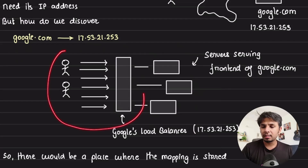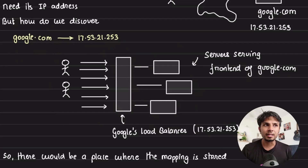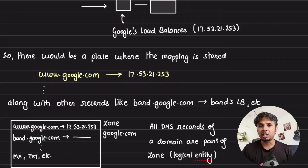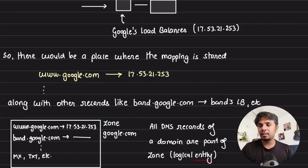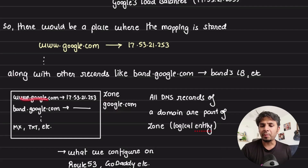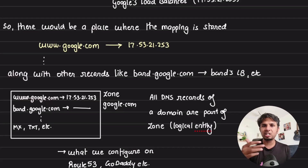How does your browser know that when someone reaches out to google.com it needs to connect to that particular IP address? Somewhere this mapping needs to be stored — that www.google.com maps to 17.53.21.253. This is typically the A record or the CNAME record in the DNS configuration at Google, stored in a DNS zone.